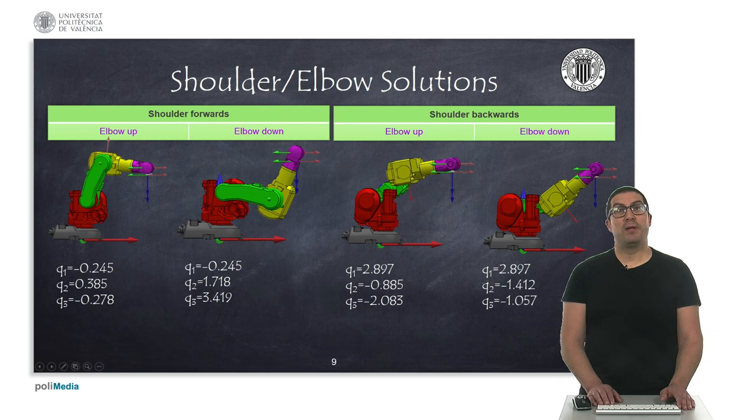To sum up, we have four possible configurations to reach the same wrist point. And as a consequence of combining shoulder forwards and backwards configurations with elbow up and down configurations, we have these four possible configurations. Here I just show the numerical values that I have obtained for each of these configurations. You can check them based on the ideas that I have explained before.